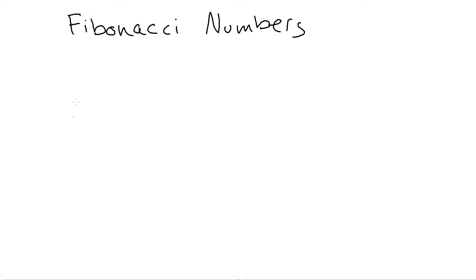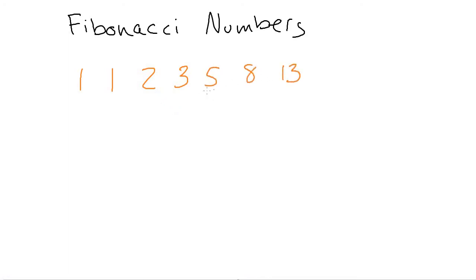So let's take a look at the Fibonacci numbers. The Fibonacci numbers are a sequence where you start with one for the first number and one for the second number, and then each subsequent number is the sum of the two previous. So one plus one is two, one plus two is three, two plus three is five, three plus five is eight, five plus eight is thirteen, eight plus thirteen is twenty-one, and we carry on like this finding the next number by adding the two previous ones. This sequence sometimes shows up in nature and biological settings, like the way trees branch off.